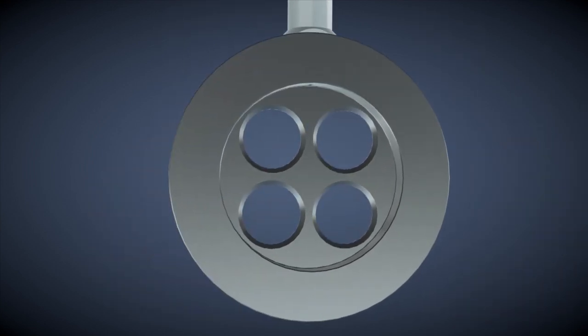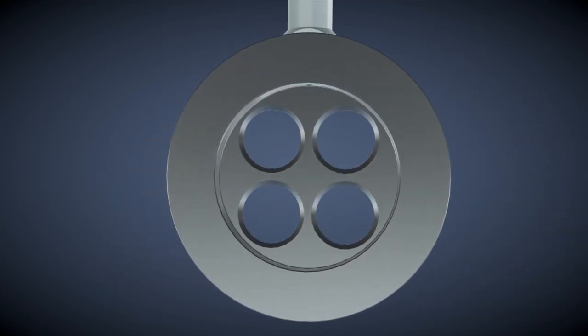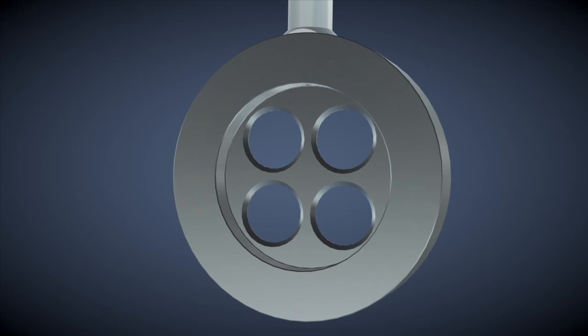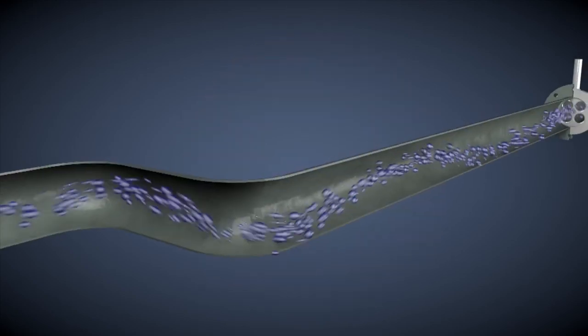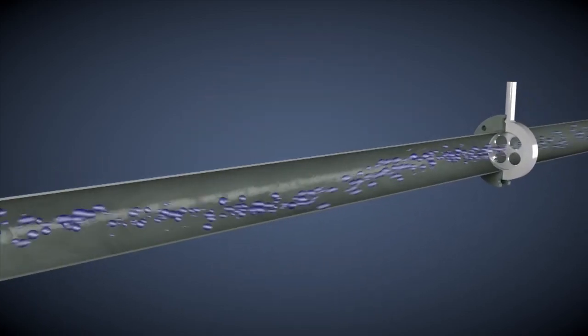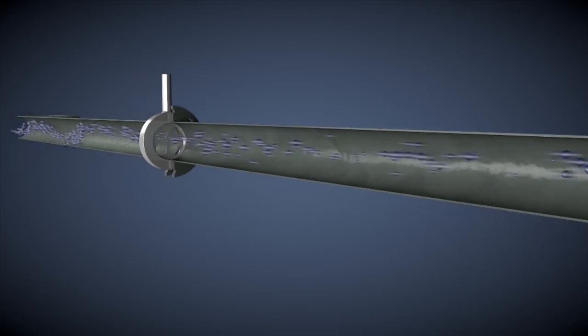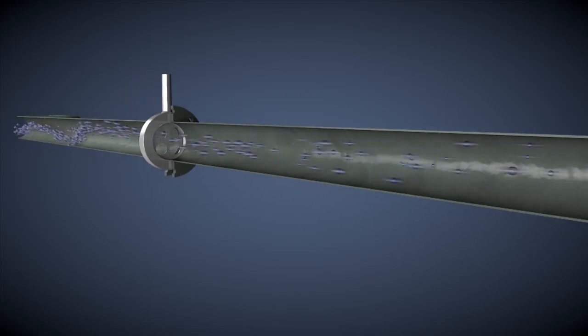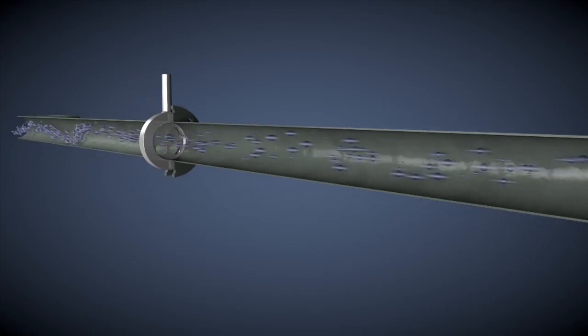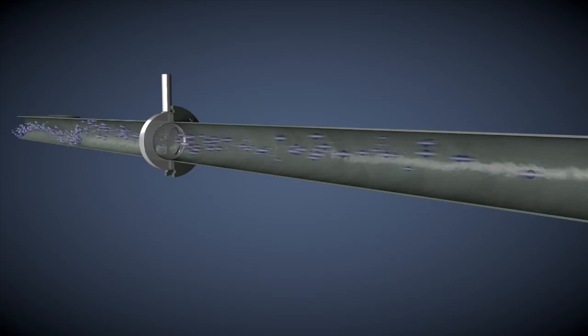The four holes help condition the irregular flow profiles caused by upstream disturbances, which can result in swirling effects. The four-hole geometry reshapes the flow profile across the entire pipe so that you get a more stable measurement. This unique design makes it possible to measure more accurately with less straight run.